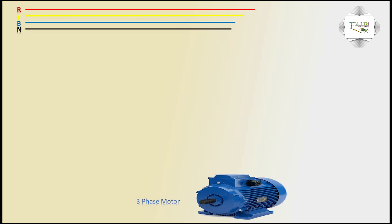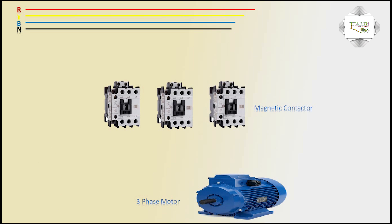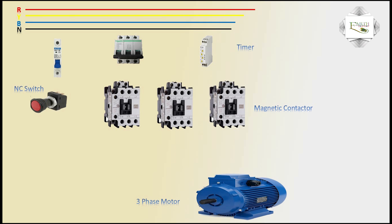Three-phase industrial motor, magnetic contactor, magnetic contactor, three-phase TP, one piece timer. Star-delta connection uses a timer, SP magnetic contactor coil on, NC switch normally closed switch, motor.